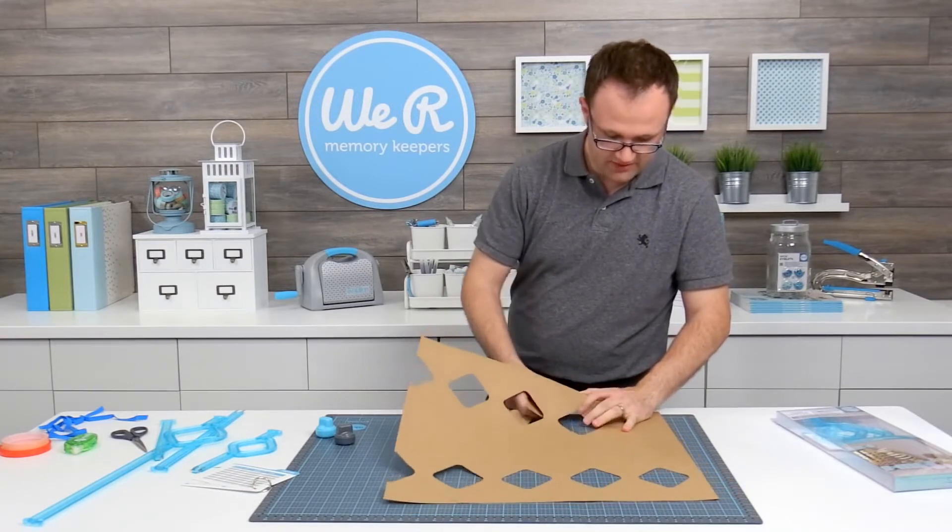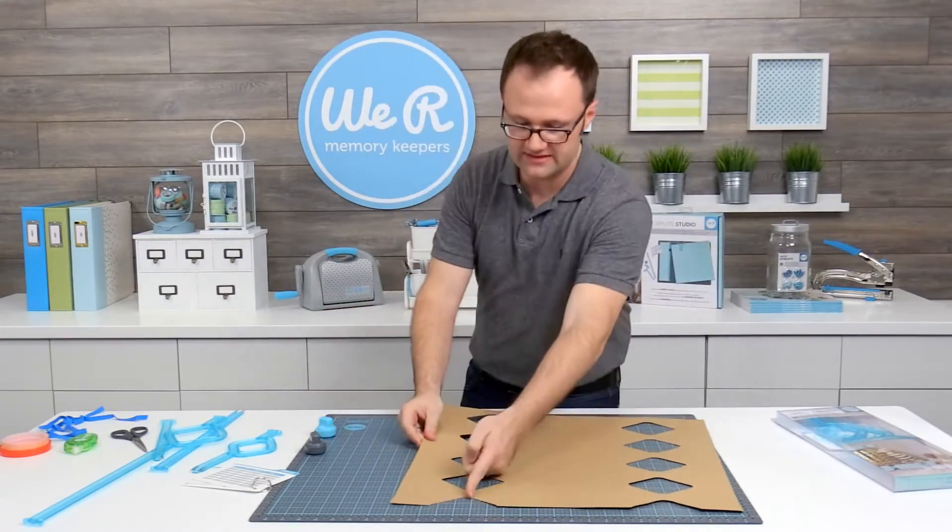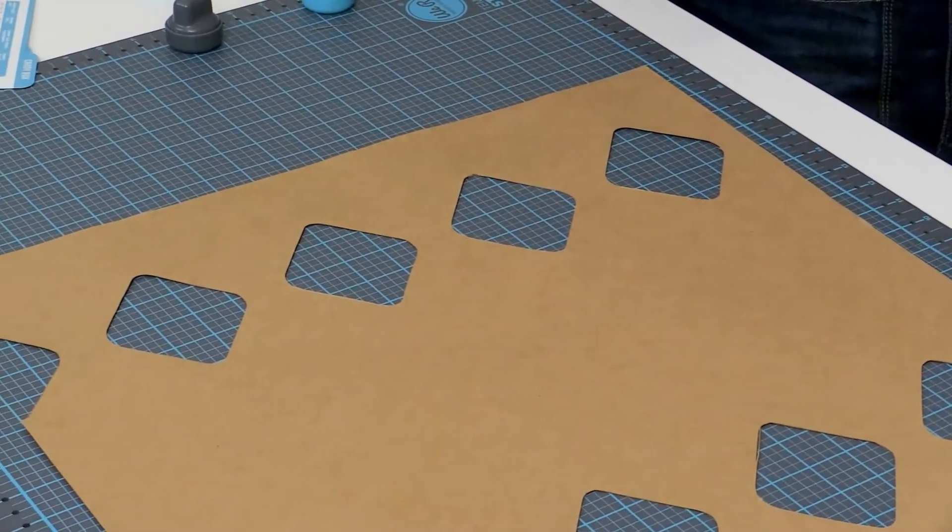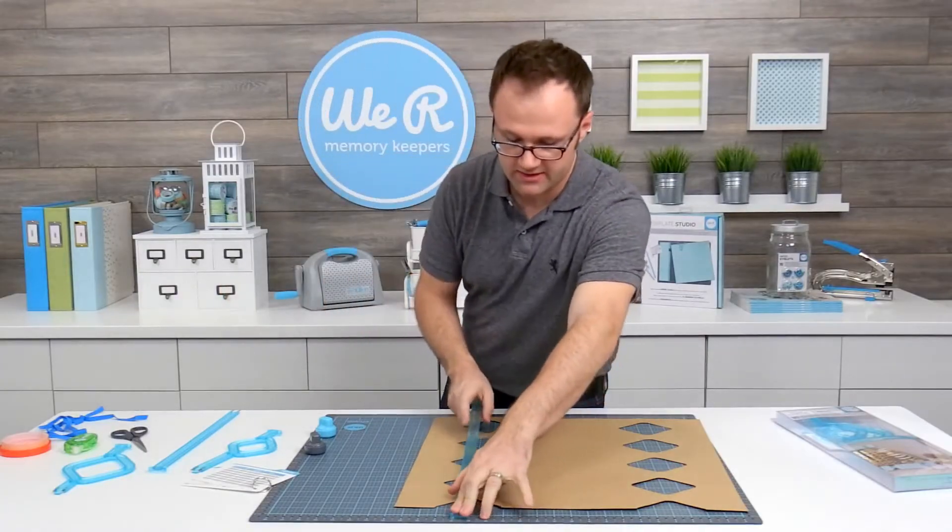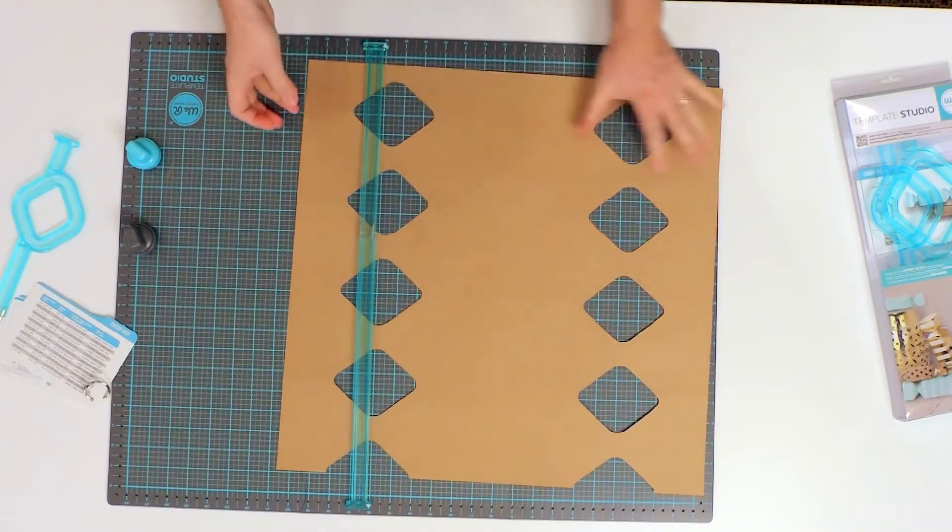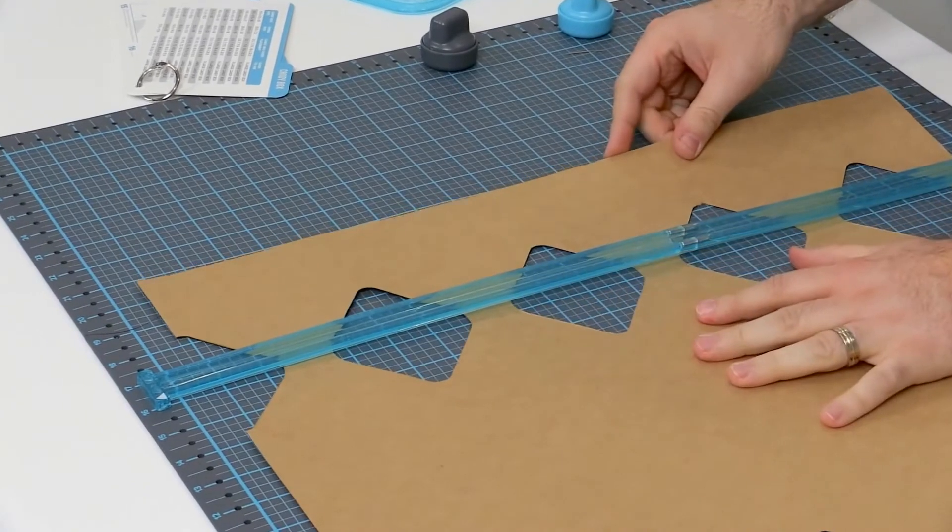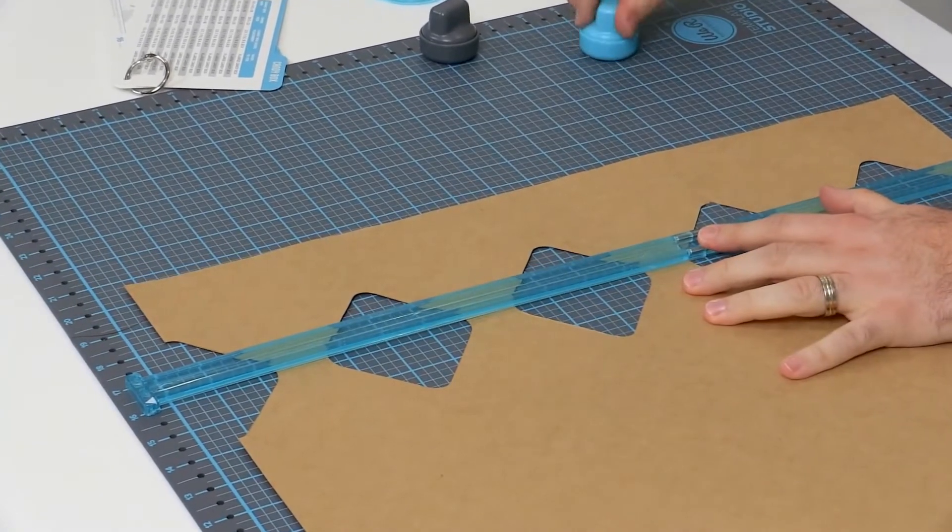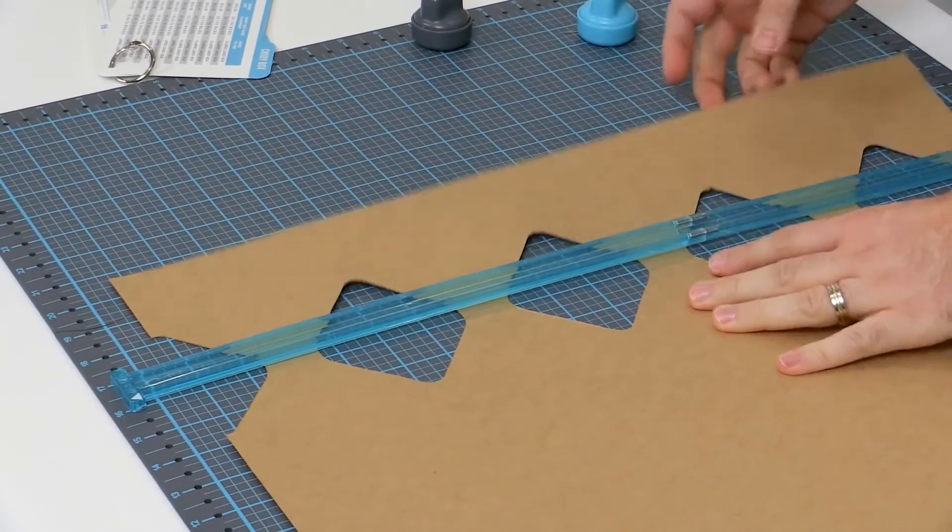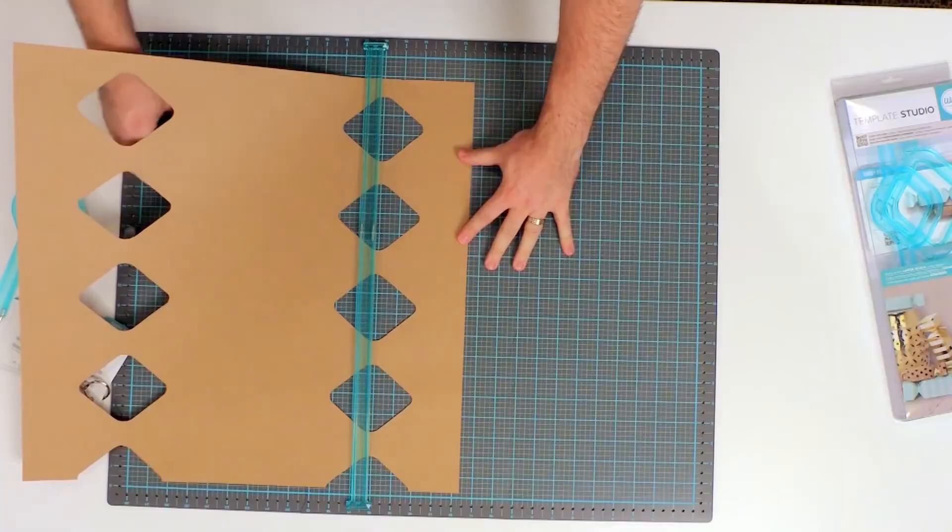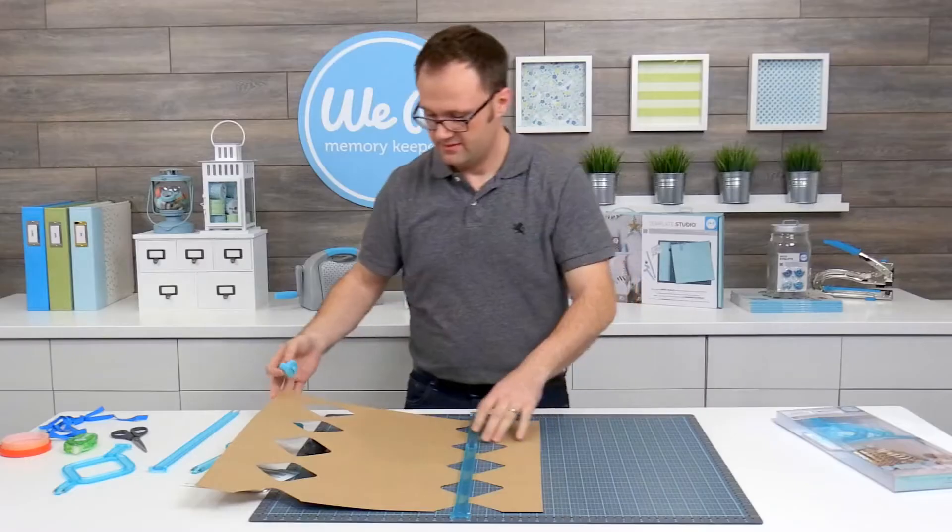Now one thing I've found in doing these is it's actually really helpful to score along the center of these diamonds. In the instructions, we have that as an optional step. It is optional, but I've found it works best. So you just align your A and B template guides vertically. It doesn't really matter where on the mat you have them, just put it anywhere. And you're just going to line this up here and you're just going to score along the center of here. And that's actually going to help you when assembling this so that it just folds up nicely.